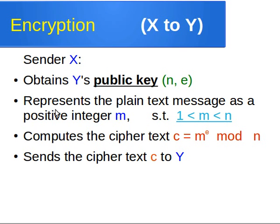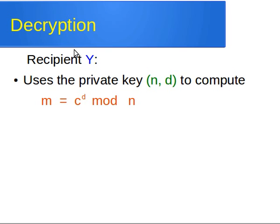X obtains Y's public key, which is N and E, then X represents the plain text as a positive integer M where 1 < M < N. Then X computes the ciphertext — X encrypts M using the public key of Y. This is done as follows: the ciphertext C equals M raised to power E, then computed modulo N. So we raise M to power E, divide by N, and the remainder is the ciphertext. C = M^E mod N, and then we send that to Y.